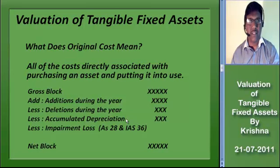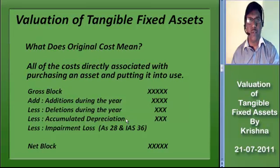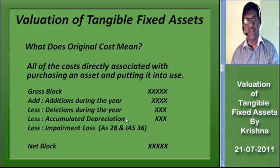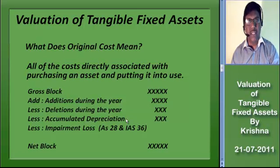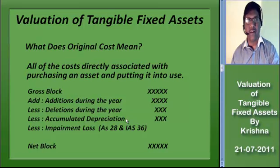Part 1 of Schedule 6 to the Companies Act requires stating the net book value of each head of asset: original cost, plus additions during the year to the particular block, minus deletions to the particular block, minus accumulated depreciation up to the end of the year, minus the impairment loss calculated as per Accounting Standard 28.